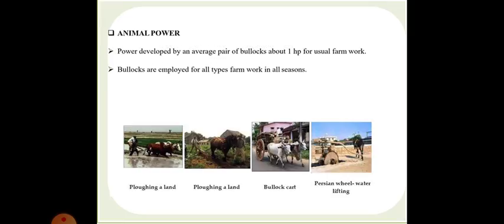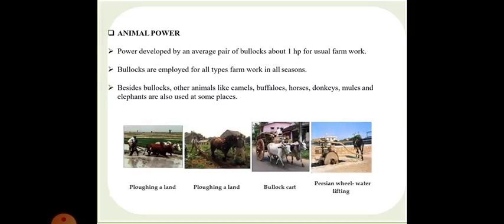Besides bullocks, there are other animals like camels, buffaloes, horses, donkeys, mules, elephants that are also used in some places. The average force a draft animal can exert is nearly one-tenth of its body weight. So if you need to calculate the average force, you must know the body weight of the animal.